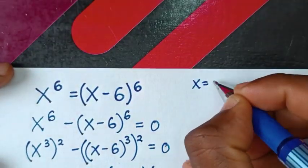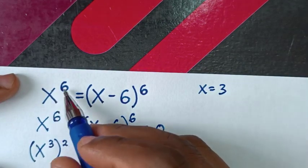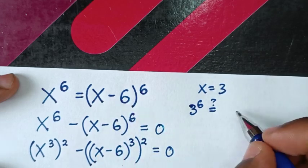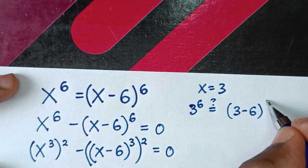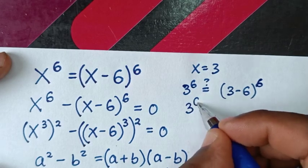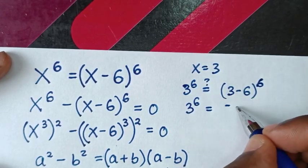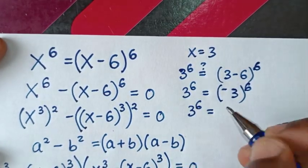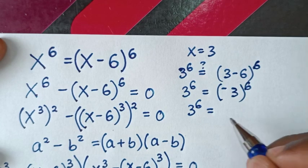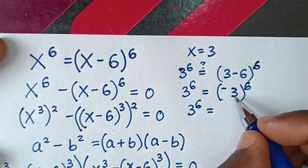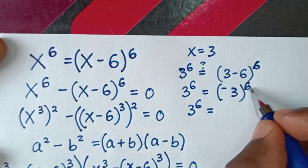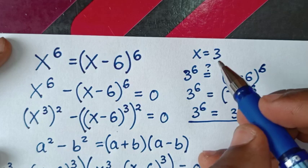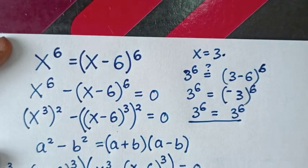To verify the real solution, substitute x equals 3 into the original equation: 3 power 6 should equal 3 minus 6 bracket power 6, which is negative 3 bracket power 6. Since the exponent is even, negative 3 to the power 6 is positive, so it equals 3 power 6. Left side equals right side, confirming x equals 3 is correct, and similarly the complex solutions also satisfy the equation.